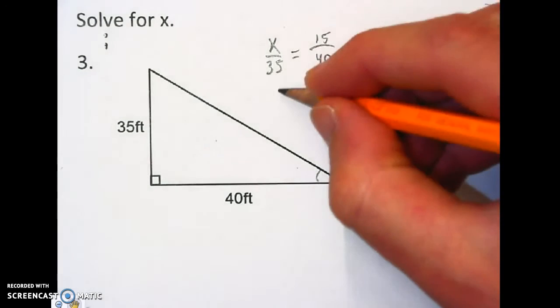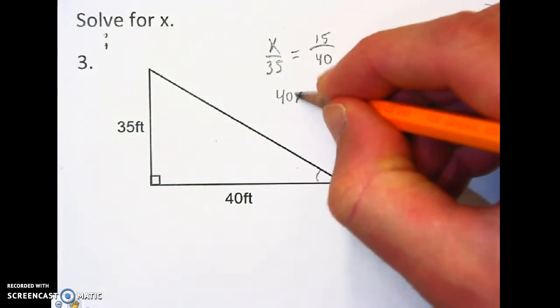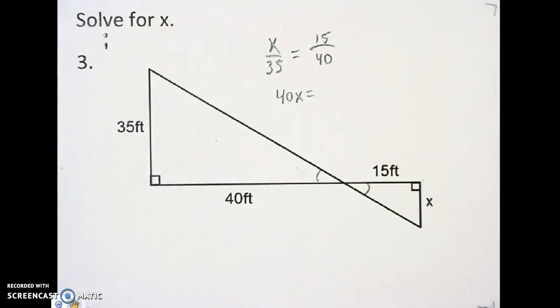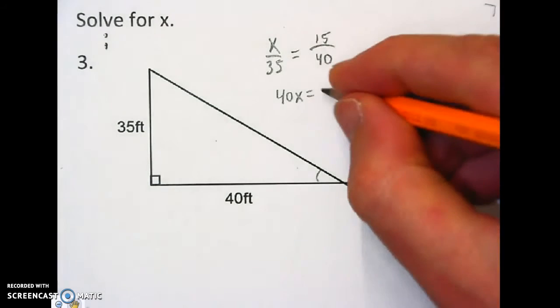I'm going to do my cross multiplication. Get 40x equals 15 times 35, which is 525.